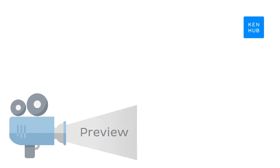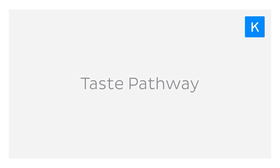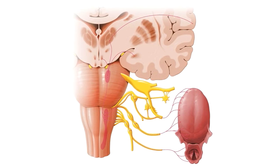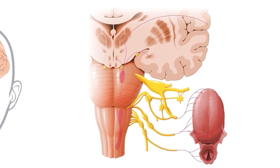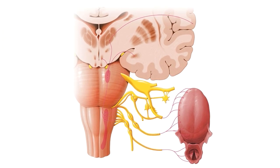Hey everyone, it's Nicole from Kenhub and welcome to this tutorial on the taste pathway. We'll mostly be using this helpful diagram today, highlighting the parts that we're talking about in green as we go along. We'll be looking at a coronal section through the brain and the brainstem from an anterior view. The slice of the brain has been cut just anterior to the pons in a coronal section, and we're looking at this image because conveniently the taste pathway runs nicely in this plane.